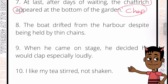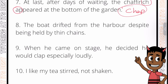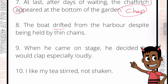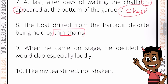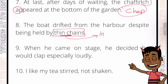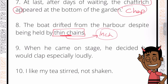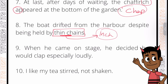Question 8: 'The boat drifted from the harbor despite being held by thin chains.' The answer is 'thin' and 'chains' because 'inch' — I-N-C-H — is hidden between them. Look at how I'm attempting these questions: going for the last letters of one word and the beginning letters of the next.